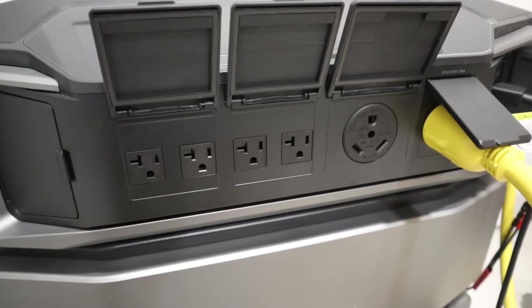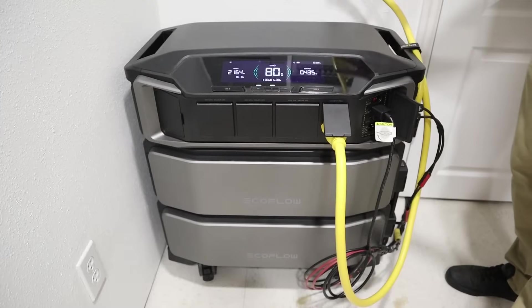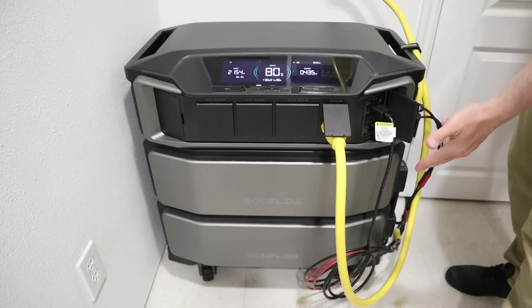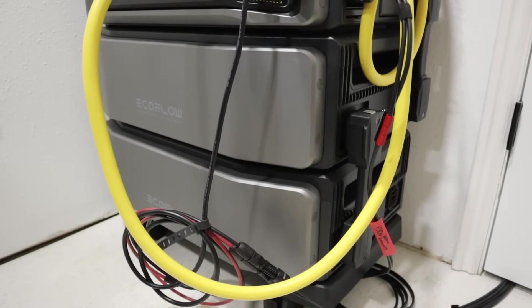You also have multiple AC outputs here and USB ports if you like. Below the head unit, you have batteries. Each one of these batteries is a six kilowatt hour lithium iron phosphate battery, and you can add multiple batteries. For example, in this setup, I have two of them for a 12 kilowatt hour system.